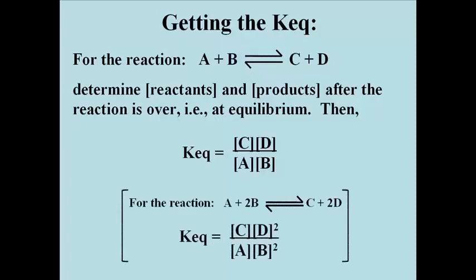More accurately, the concentrations would have to be raised to a power determined by the stoichiometry of the reaction, as in the second generic example shown here, in which A plus 2B goes to C plus 2D. Then the K equilibrium, or the equilibrium constant, is equal to the concentration of C times the concentration of D squared, divided by the concentration of A times the concentration of B squared.